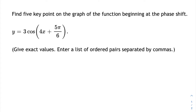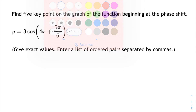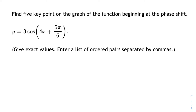Here we're asked to find five key points on the graph of the function beginning at the phase shift. To do this, we have to remember what one period of a cosine looks like beginning at the phase shift. One period of cosine starts at a maximum, then goes to an x-intercept, then to a minimum, then to another x-intercept, and then back to a maximum. Those are the five key points we're looking for.